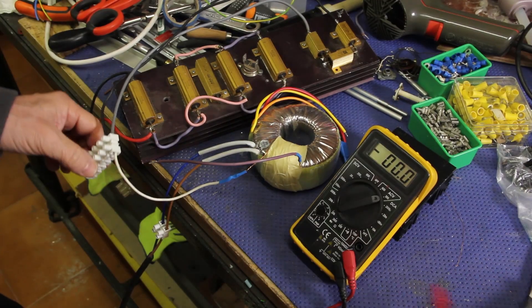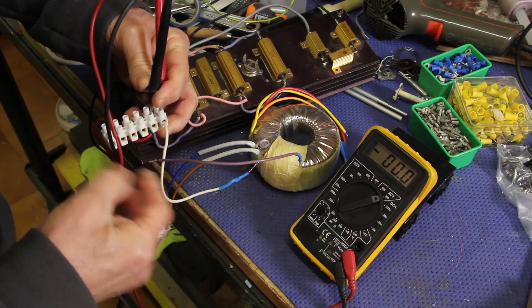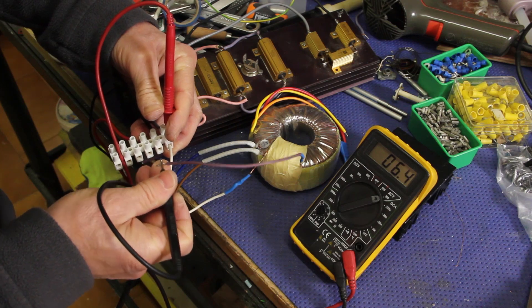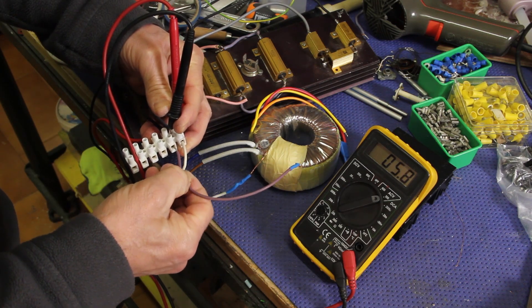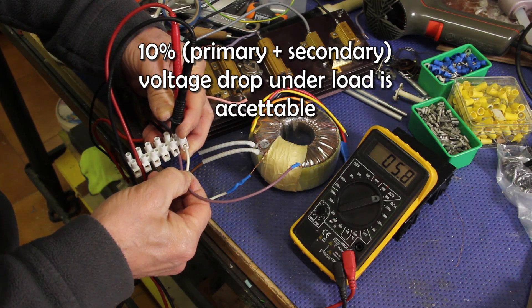Okay, let's try with this load. This is 3 ohm load of 2 amps. At the moment we have 6.4 volts with no load. And under load we have 5.8 volts. That is pretty fine.